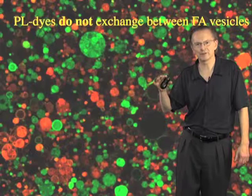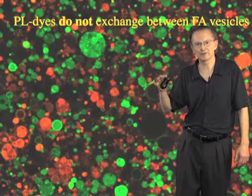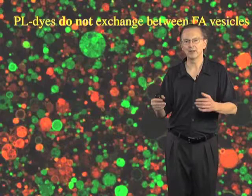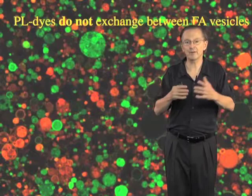In this slide, what you see are two populations of vesicles that were labeled with phospholipid dyes. So they're not exchanging between vesicles. The picture here was taken after about a day, and so you can see that they haven't all just fused and mixed up. There are still red vesicles and green vesicles.